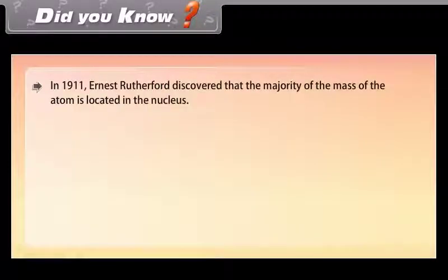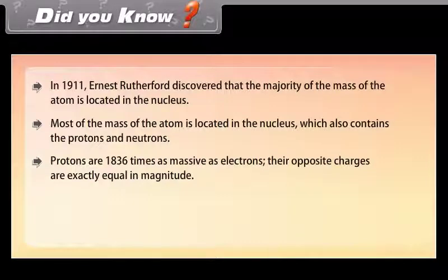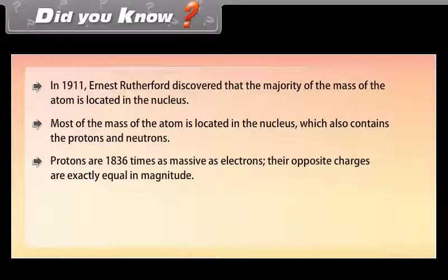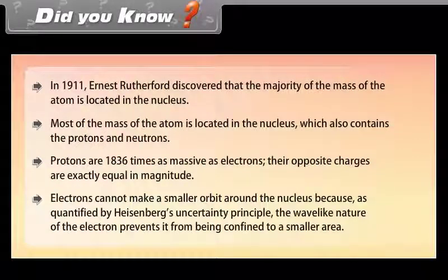Did you know: In 1911, Ernest Rutherford discovered that the majority of the mass of the atom is located in the nucleus. Most of the mass of the atom is located in the nucleus, which also contains the protons and neutrons. Protons are 1836 times as massive as electrons, though their positive charges are exactly equal in magnitude. Electrons cannot make a smaller orbit around the nucleus because, as quantified by Heisenberg's uncertainty principle, the wave-like nature of the electron prevents it from being confined to a smaller area.